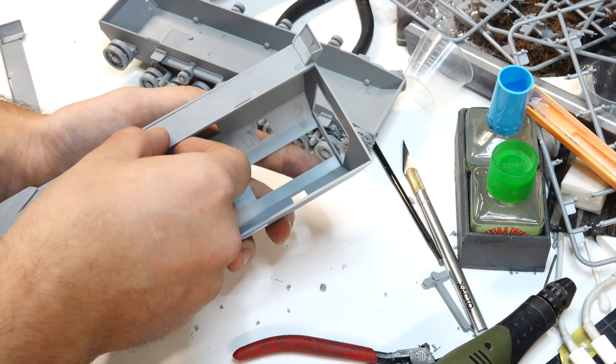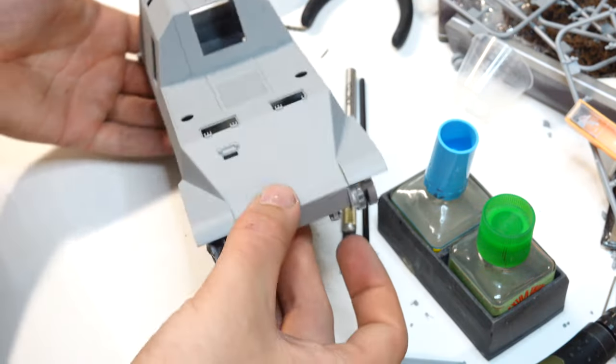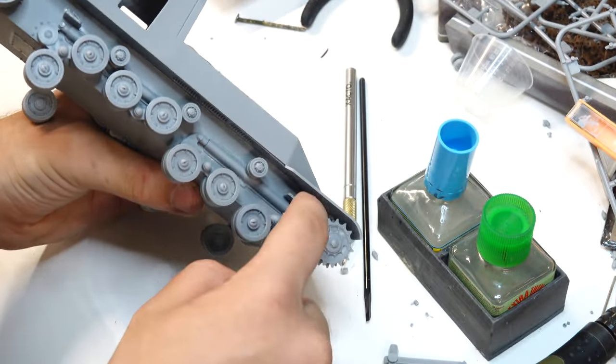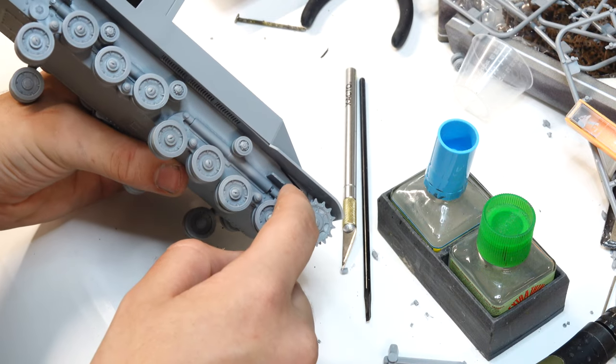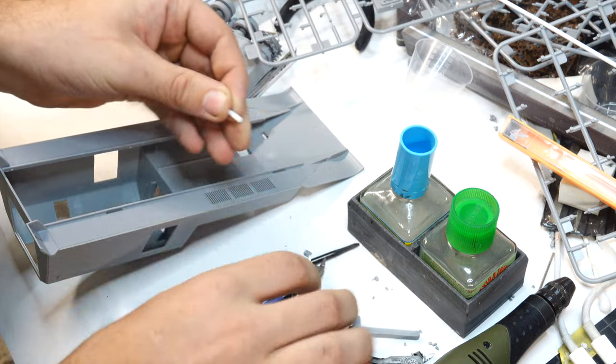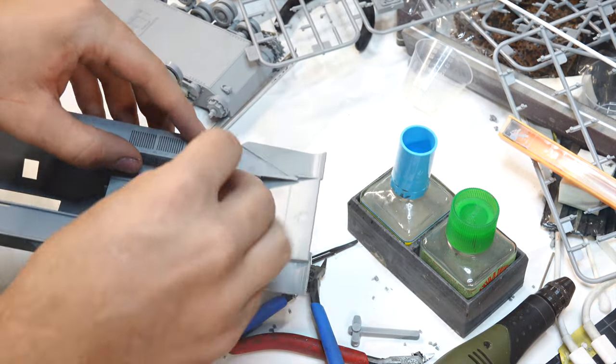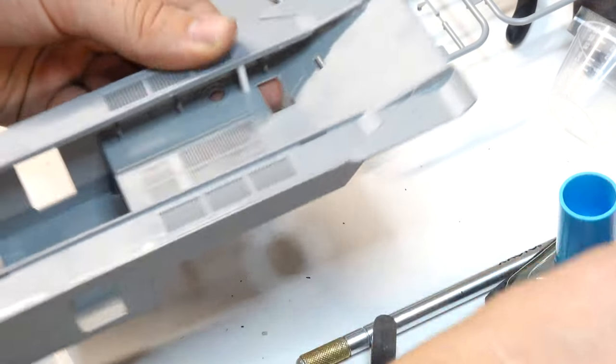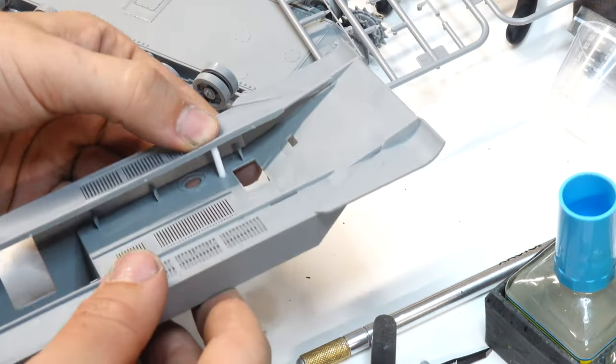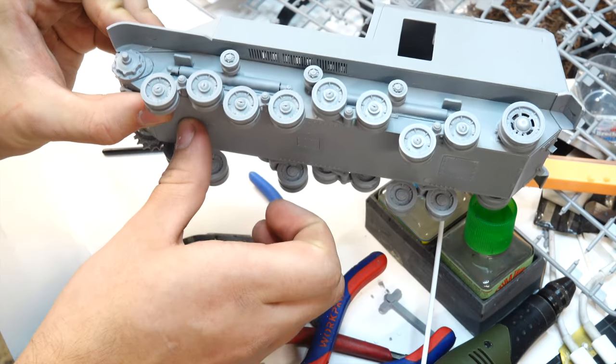The instructions tell you to secure the side skirts to the lower hull first, but I decided to attach them to the upper hull. This caused a slight fit issue, so I had to fix it here. I'm basically cutting a styrene rod so I can place it between the hull and the side skirts. As you can see, no more gap between both hulls.